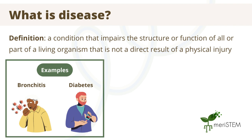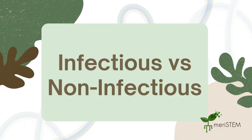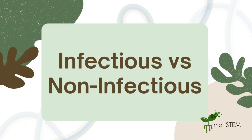Note that this definition includes any living organism. That's because other animals and even plants can get diseases. This basic definition is very broad, so let's break down the two major types of disease: infectious diseases and non-infectious diseases.